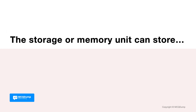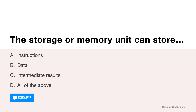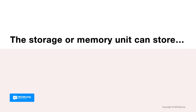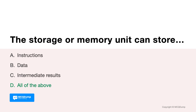The storage or memory unit can store: Options are: A. Instructions, B. Data, C. Intermediate results, and D. All of the above. Answer is D. All of the above. The storage or memory unit can store instructions, data, or intermediate results.